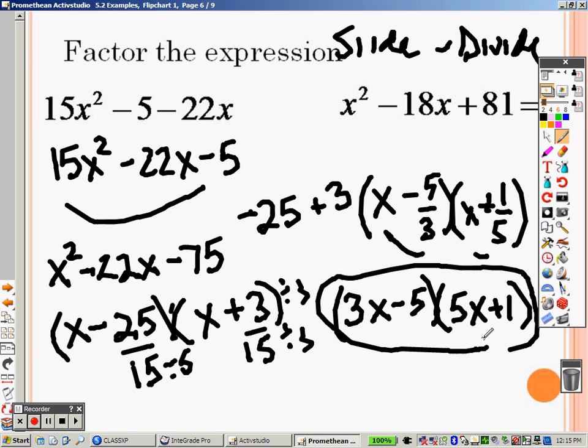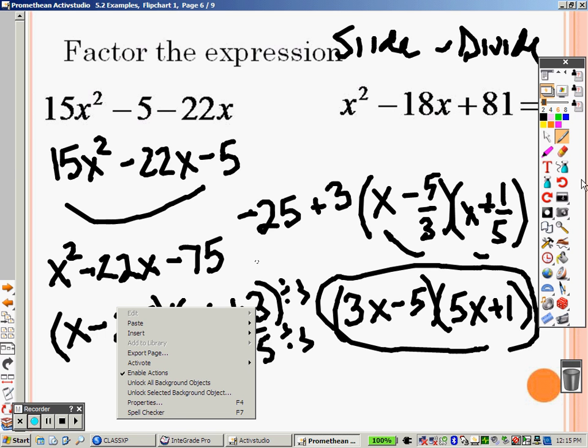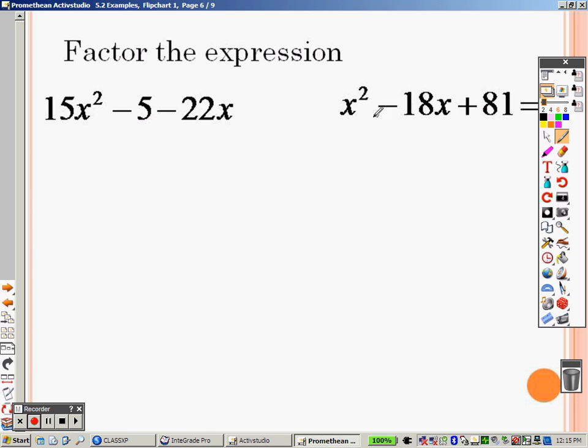Alright. So taking a look back now. This one doesn't have... This has a 1 out in front. So because it has a 1 out in front, that means I can just jump the gun. I can just write this right away and fill in my factors. What two numbers multiply to give you 81 that also add to give you 18? Well, off the top of my head, negative 9, negative 9. When you add them, you get negative 18. When you multiply them, you get 81. So x minus 9 and x minus 9.